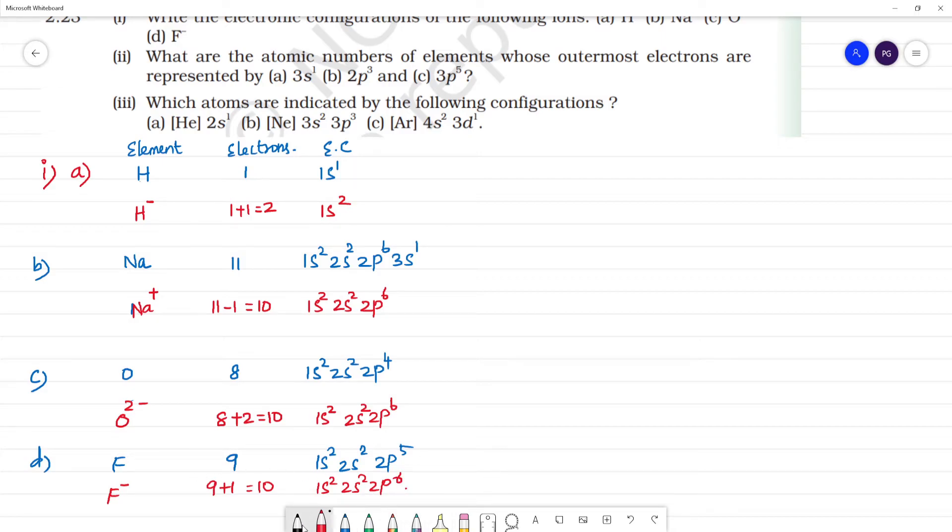So that's the first question answer. Next, second question: what are the atomic numbers of elements whose outermost electrons are represented as 3s1, 2p3, and 3p5?